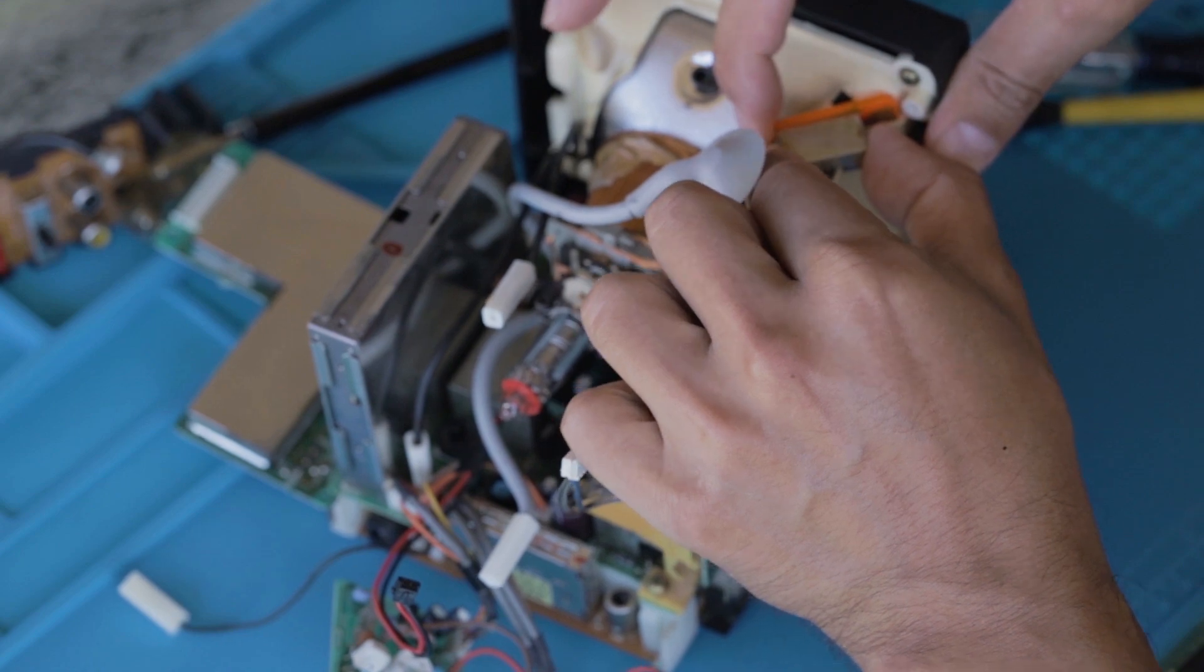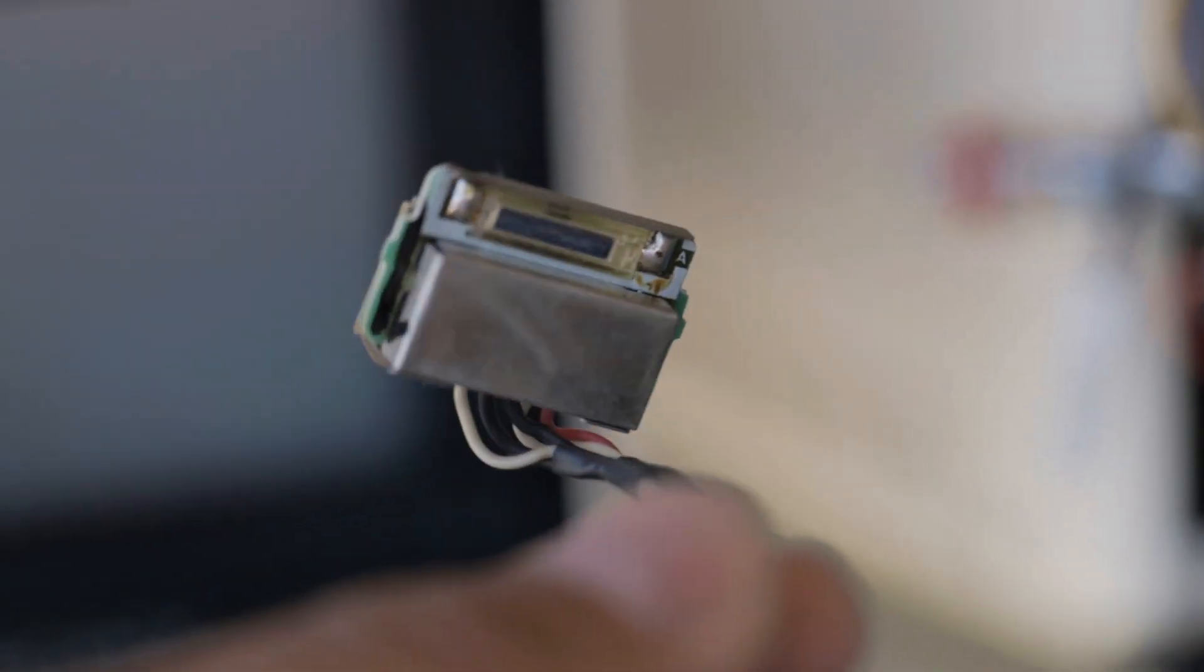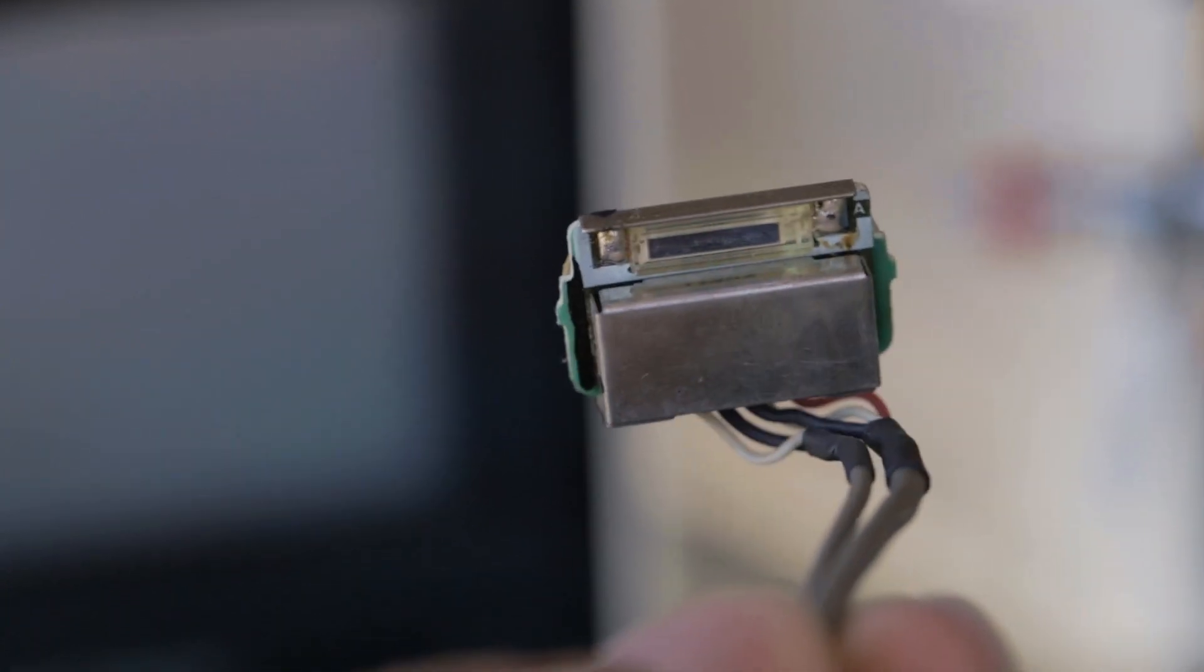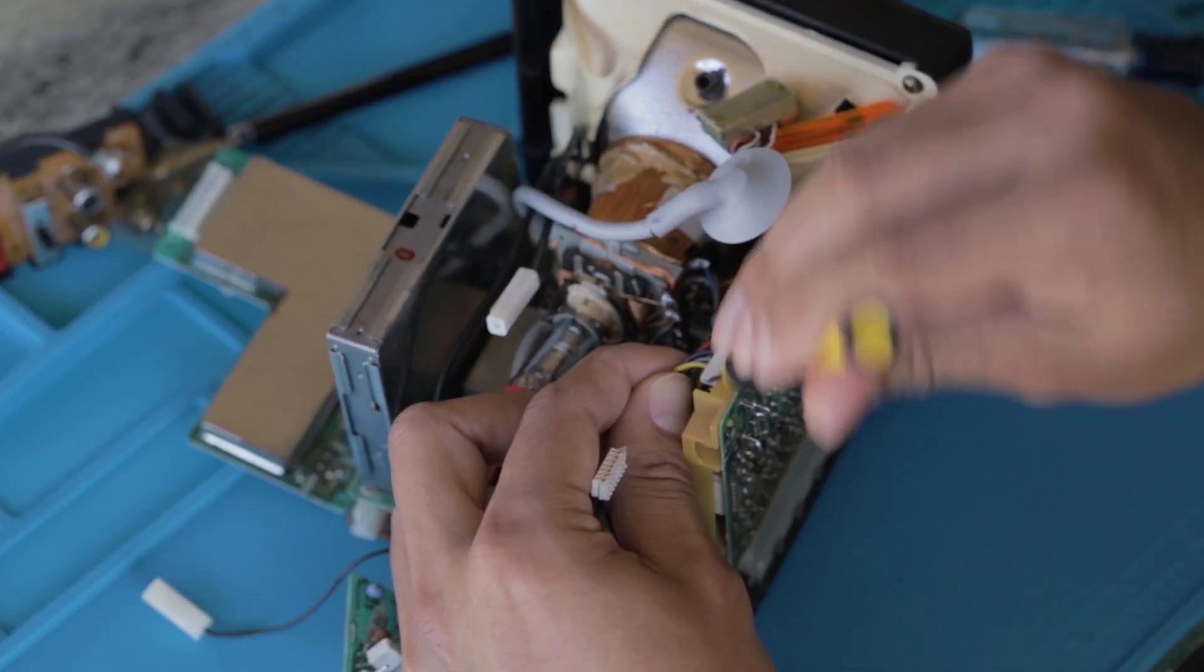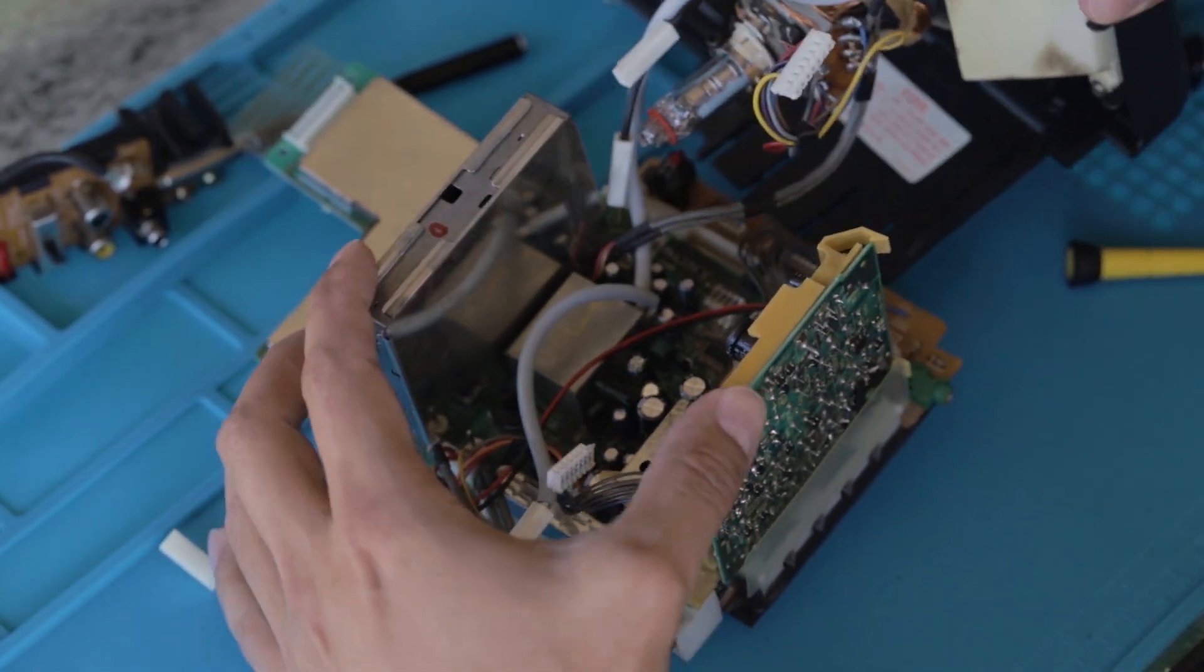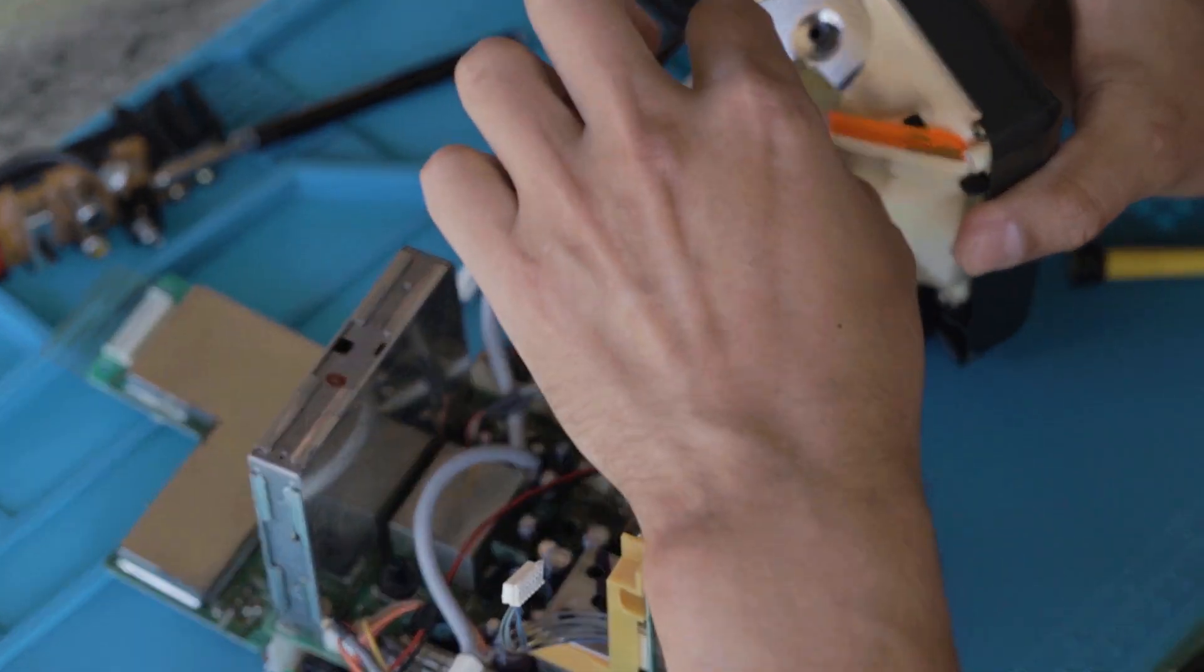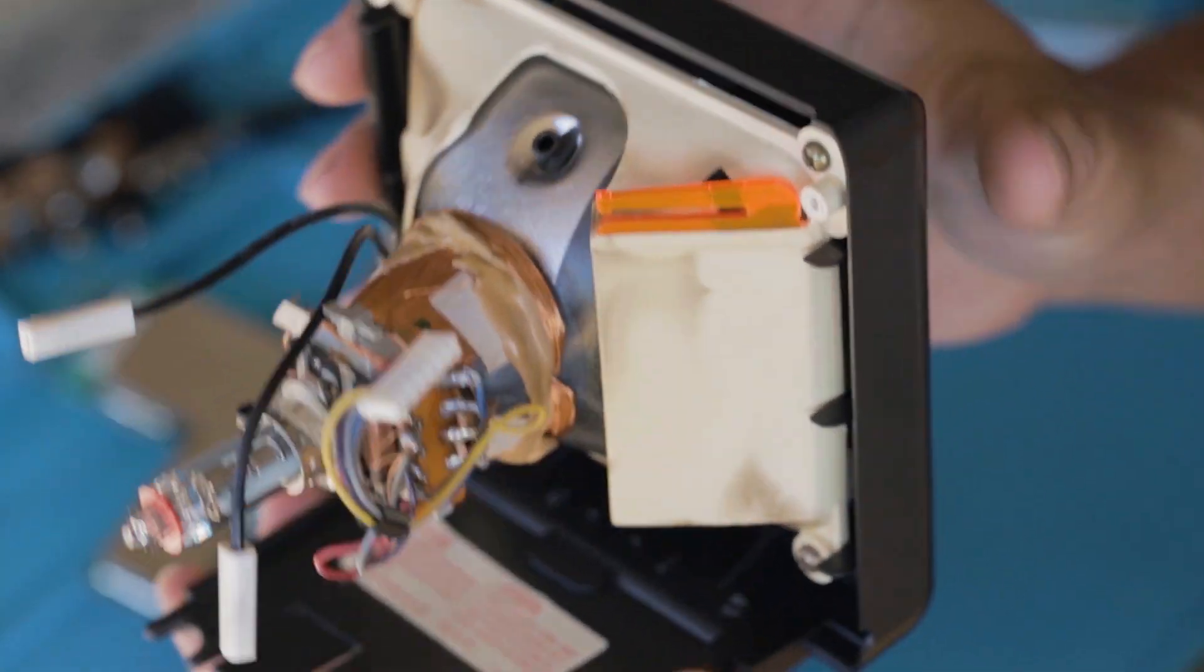Next, I can remove the UV sensor that sits behind the tube. Here's a close-up of the sensor. Then I can pop off the connector that goes between the tube and the board. And the whole front bezel and tube should come off at this point. Here's a close-up of the assembly.